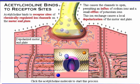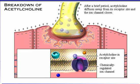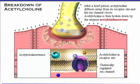Now the motor end plate is depolarized. After a brief period of time, acetylcholine diffuses away from its receptor site and the ion channel closes. Acetylcholine is then broken down by the enzyme acetylcholinesterase.